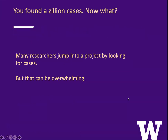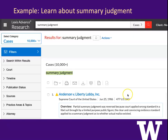Many researchers jump into a project by looking for cases, and that's very easy to do with the online systems. But the problem is it can be totally overwhelming. For example, let's say you want to learn about summary judgment. You don't know much, so you figure I'll type summary judgment into the search box. In Lexis, we get over 10,000 cases. Nobody has time to read 10,000 cases — even if you had the time, you wouldn't want to read all of those 10,000 cases.